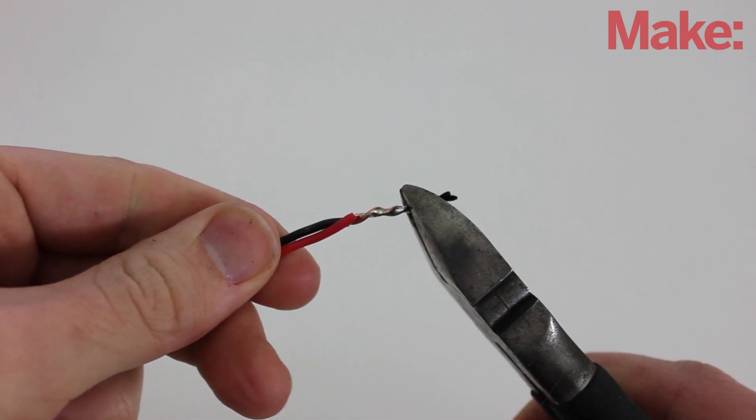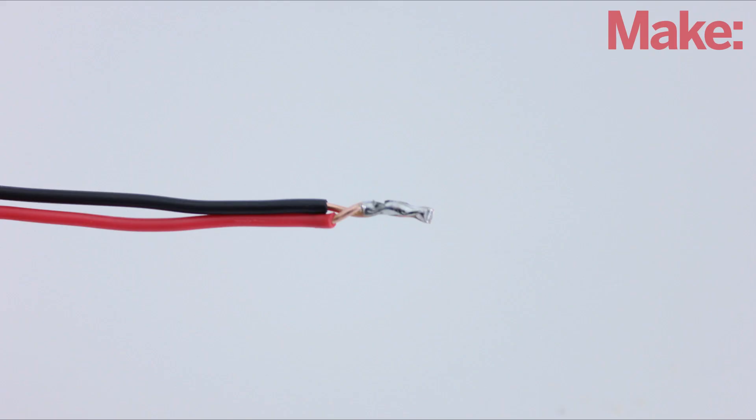When you're done, cut off the unsoldered portion of wire. Your wires should be firmly connected.